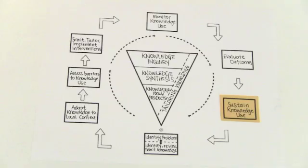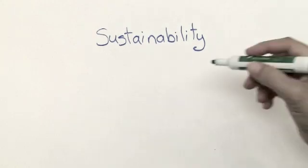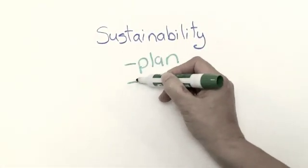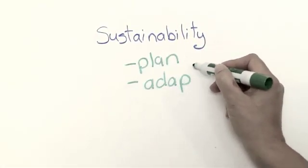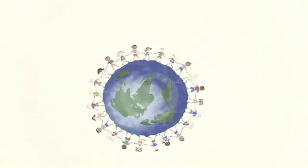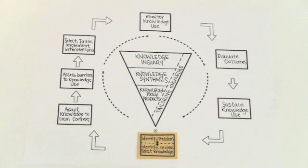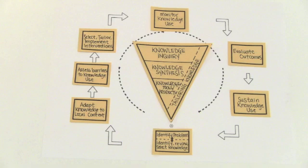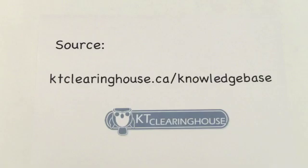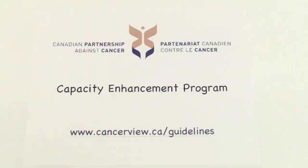And of course, it's important to make sure the knowledge will continue to be used. It's important to plan and adapt the implementation strategy for sustainability because, as we all know, things are always changing. And that brings us back to the beginning of the cycle. We hope you'll find this framework helpful when you think about and practice KT. For more information and useful tips and tools, please visit our website at www.cancerview.ca/guidelines.